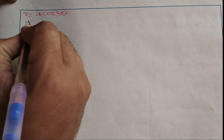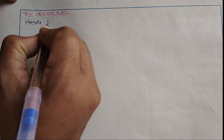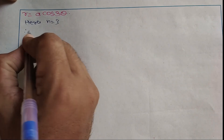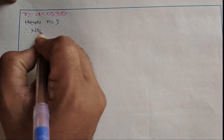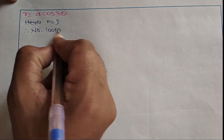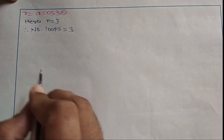Now we have to trace the curve r = a·cos(3θ). Here n is 3, therefore the number of loops: as n is odd, so there are 3 loops.